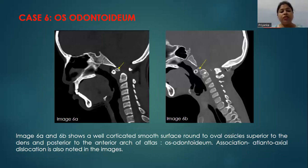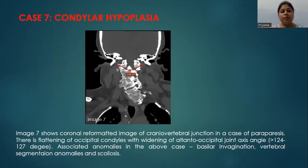Images 6A and 6B show a well-corticated, smooth surface, round to oval ossicle superior to the dens and posterior to the anterior arch of the atlas, suggestive of os odontoideum.